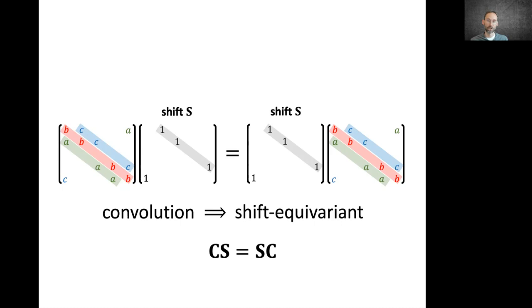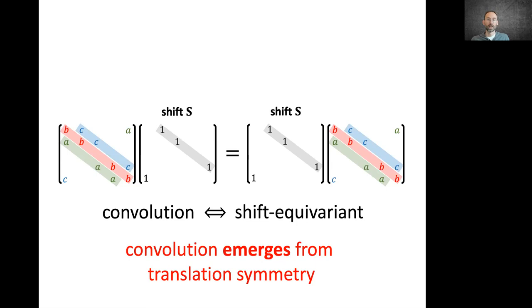This statement works in both directions. Not only does every circulant matrix commute with shift, but also every matrix that commutes with shift is circulant. What we get is that convolution is really the only linear operation that is shift equivariant. You can see here the power of our geometric approach. Convolution automatically emerges from translational symmetry.